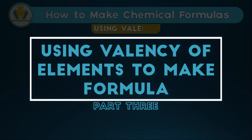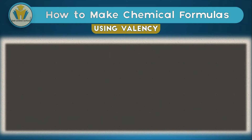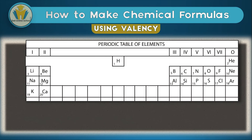Now, how do we use the second method — using valences? Before we do, let's get a clear picture of what valency really is. Valency is just the combining power of an element, and it's linked to the periodic table. In the periodic table shown here, we've only included the first 20 elements with their atomic numbers — from hydrogen and helium up to calcium.